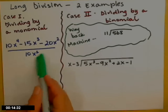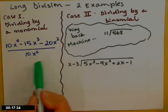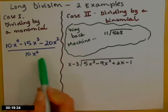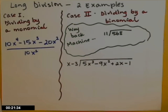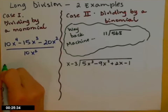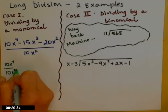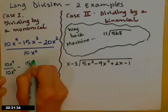So 10x squared — they're multiplying, so that makes it a monomial. When that's the case, you can just divide up that numerator so that each of those factors in the numerator lives over that denominator.